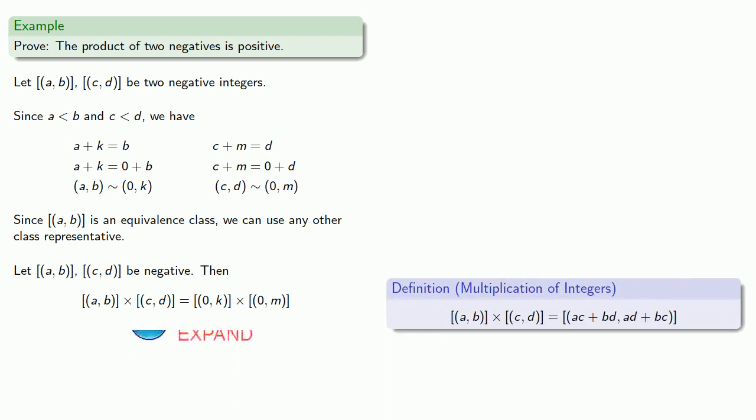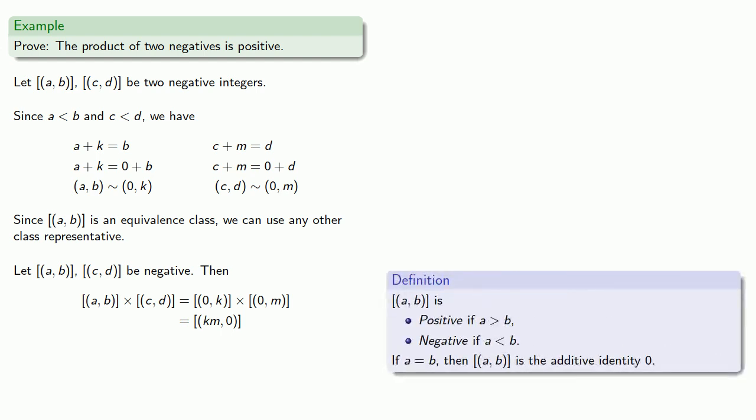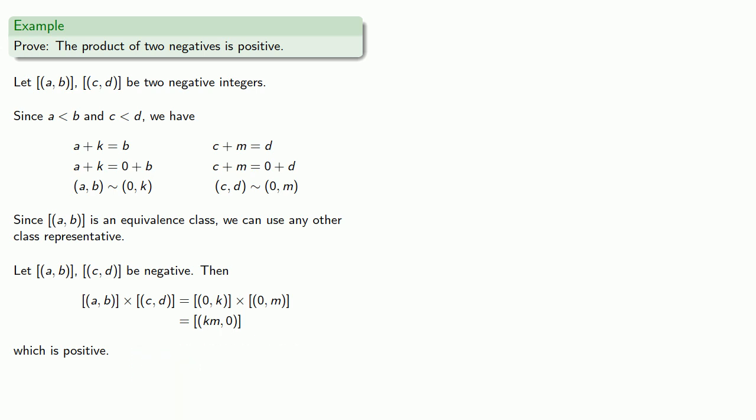And since k, m is greater than zero, this product will be positive. Now it's worth pointing out a few things about this proof.